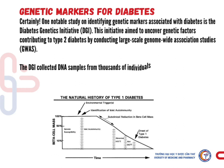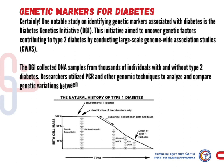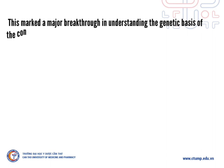The DGI collected DNA samples from thousands of individuals with and without type 2 diabetes. Researchers utilized PCR and other genomic techniques to analyze and compare genetic variation between these groups. This marked a major breakthrough in understanding the genetic basis of the condition.